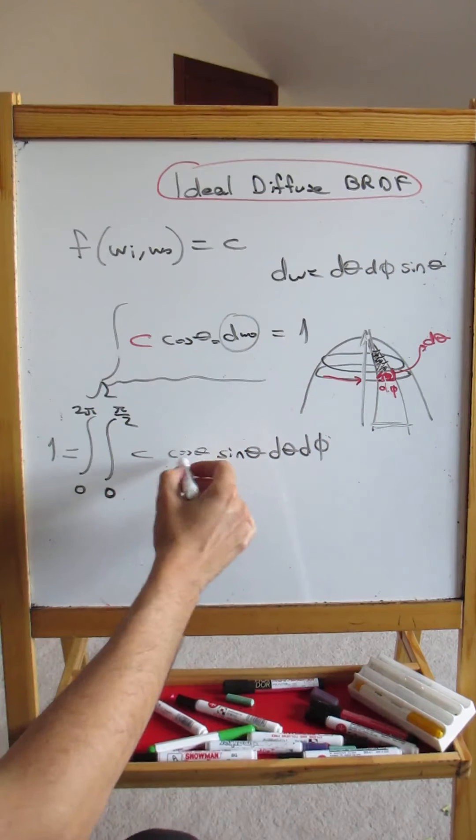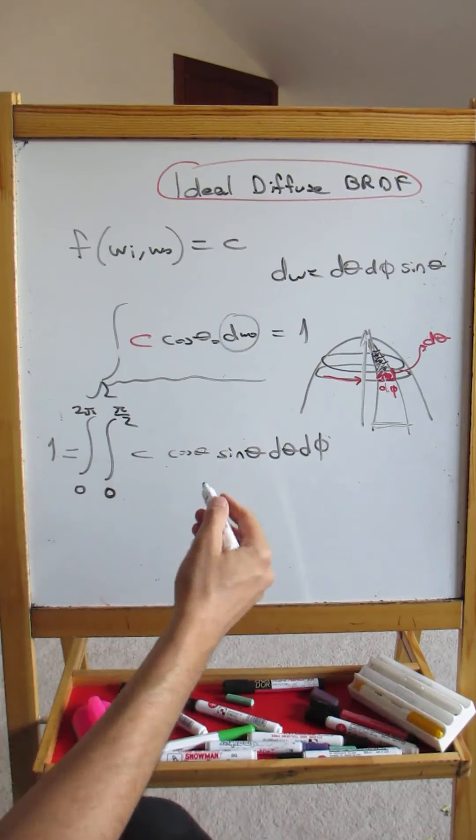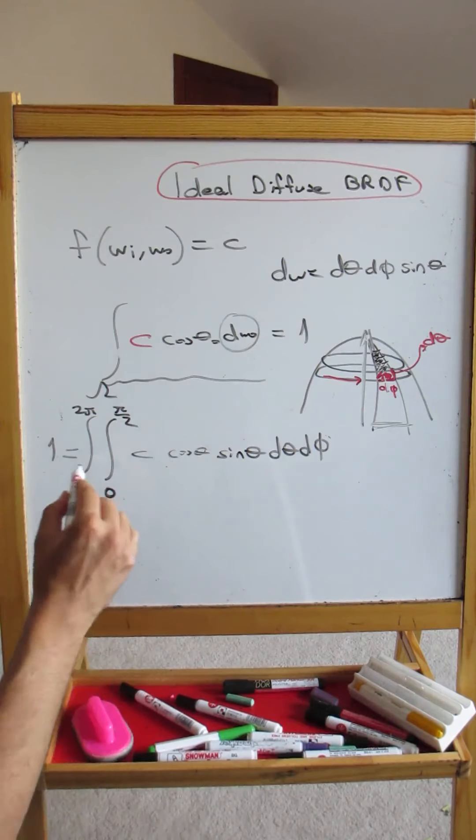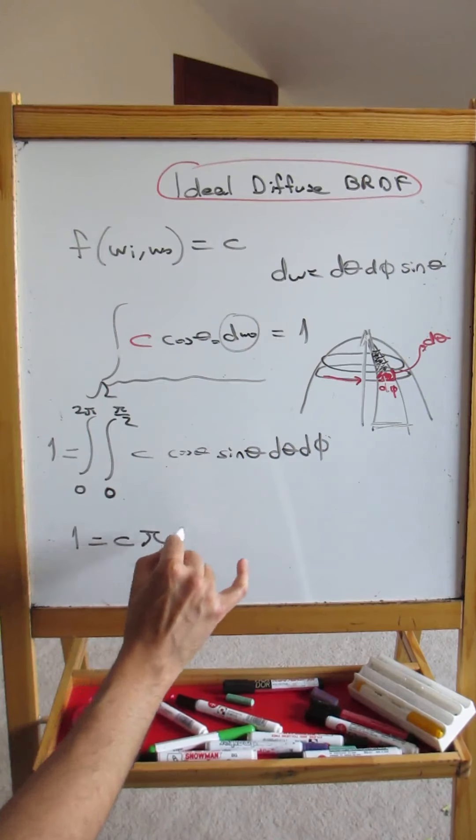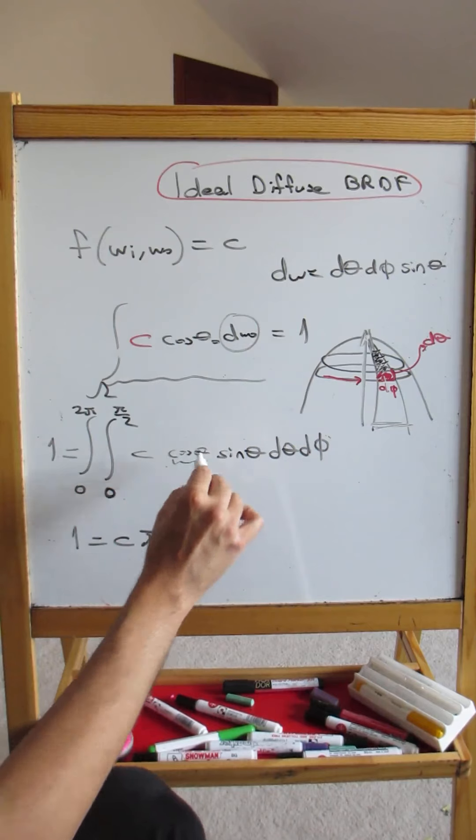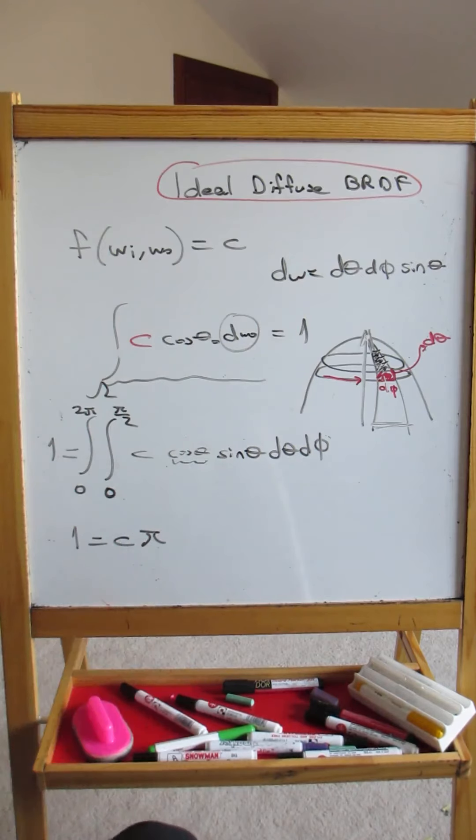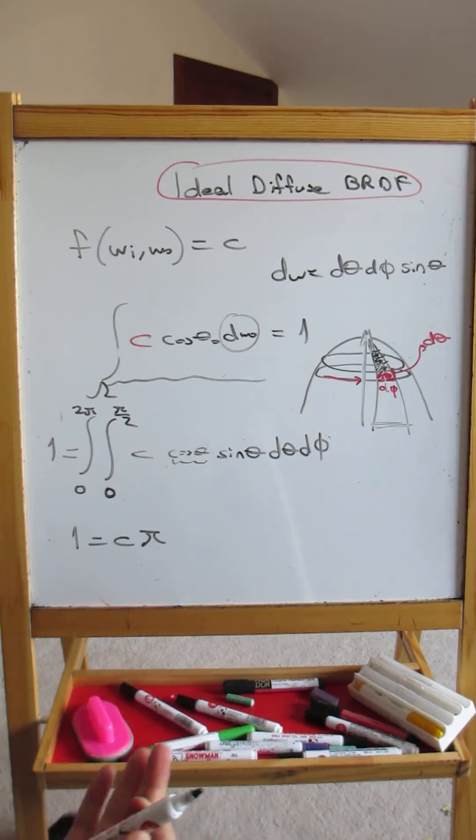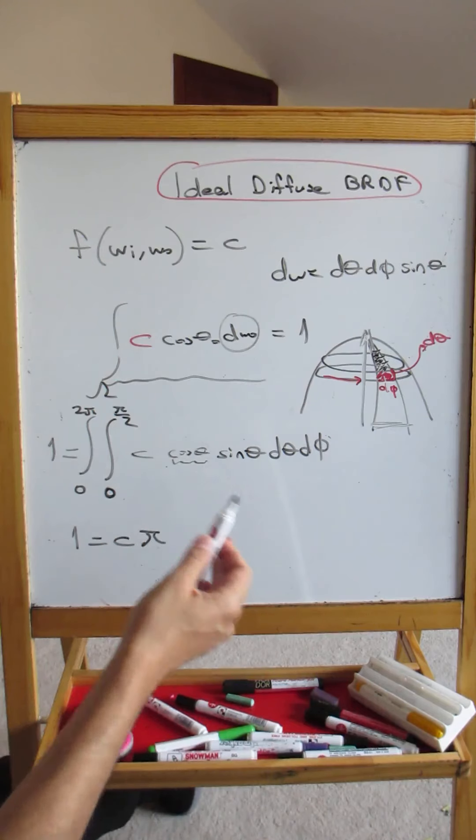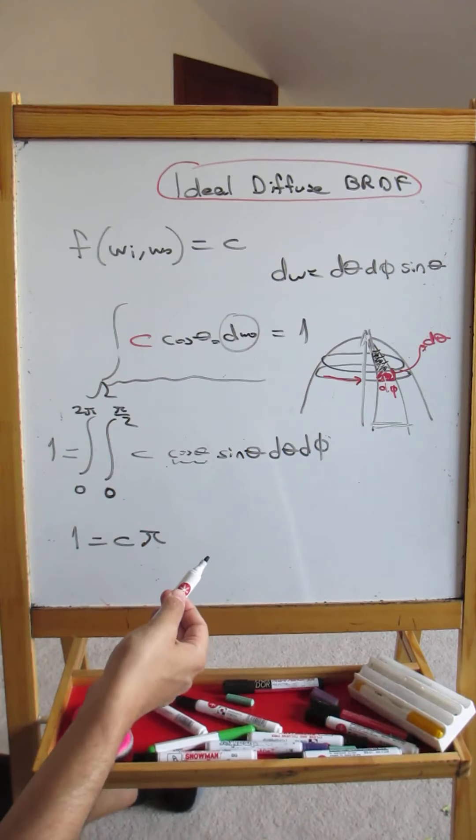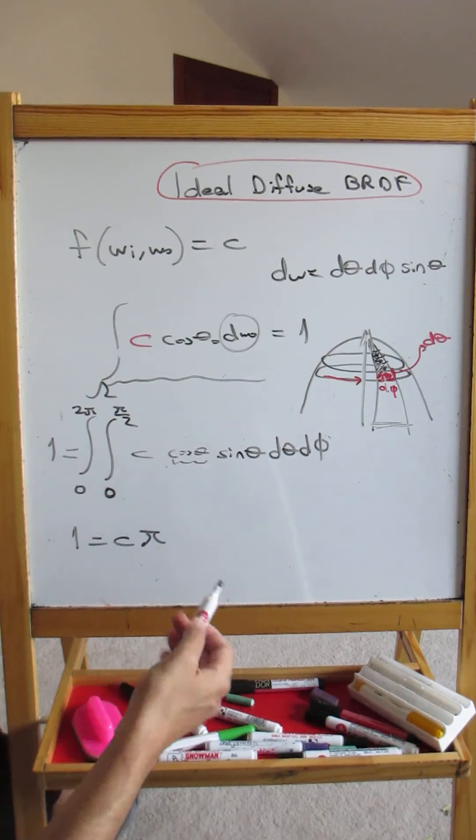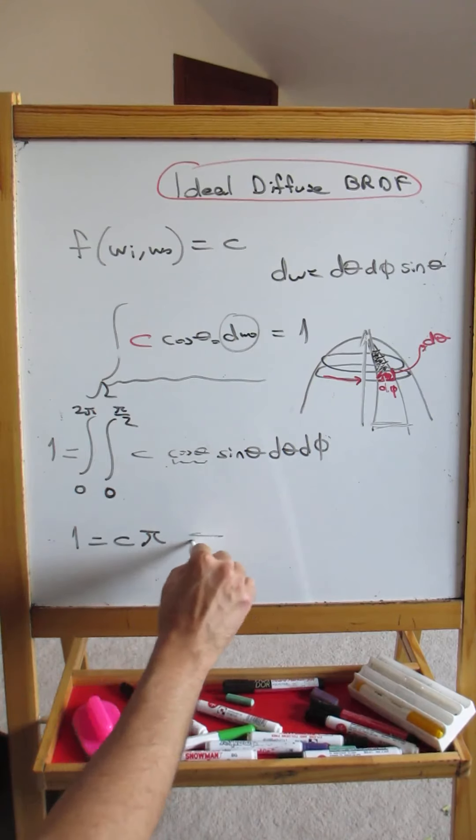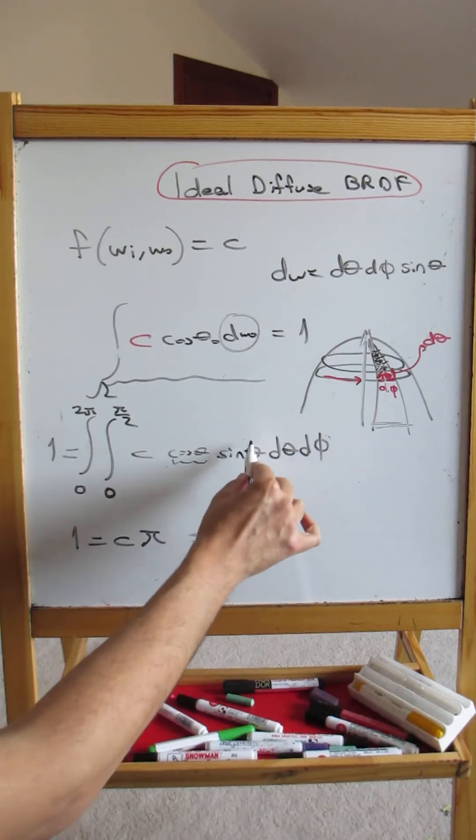Now, when you put back the cos theta here and c here, this is going to give you, this integral is easy to compute, but I don't want to do the derivation here. But what this is going to give you is that it's going to give 1 times c times pi. So the presence of the cos theta term will make this result go from 2 pi to pi. It kind of makes sense, because cos theta has a value from 1 to 0. And it will, on average, divide your result by 2. You can think of it intuitively.